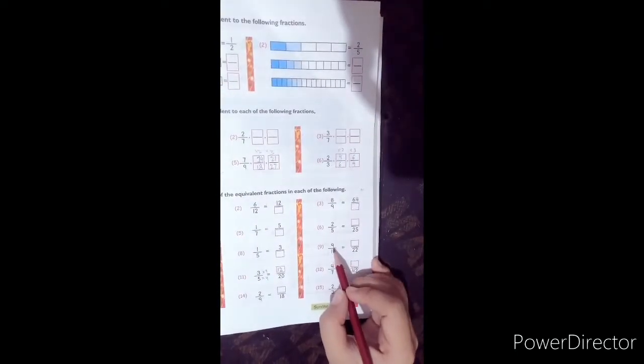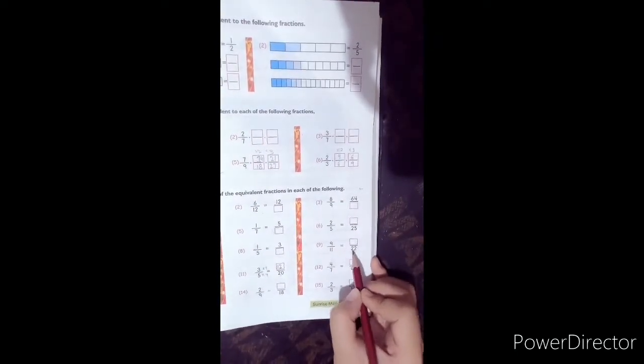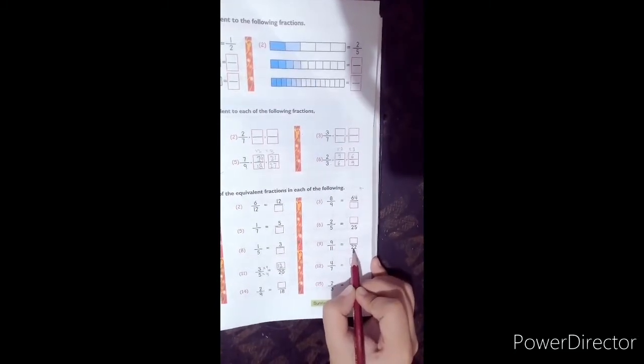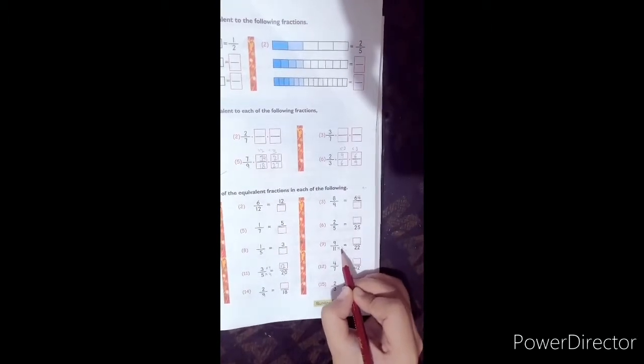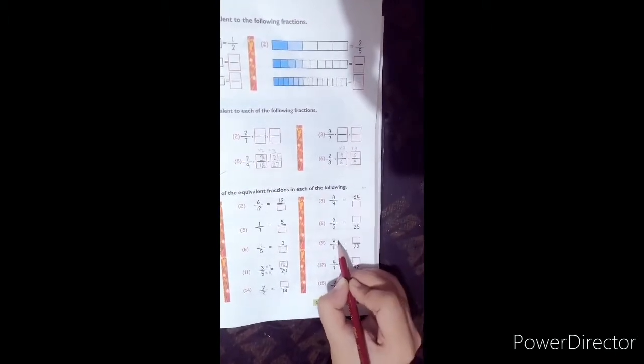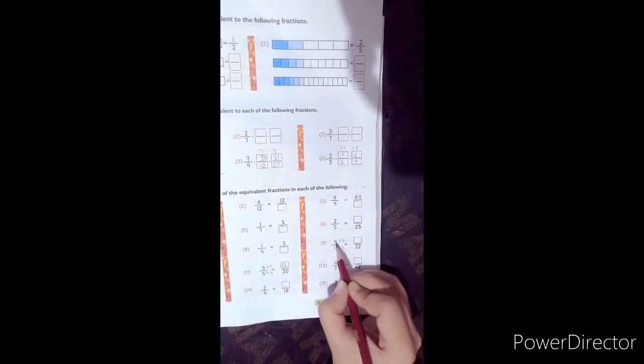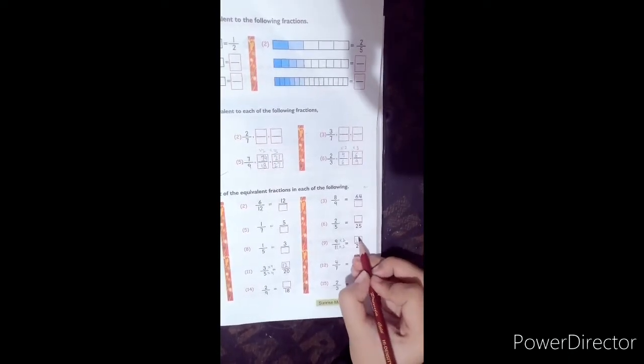In this question, we have 11 and 22, and we have 9. 2 times 11 is 22. So it means if our numerator is multiplied by 2, then we will multiply the denominator by 2. 9 times 2 is 18.